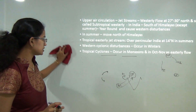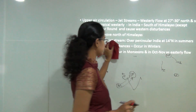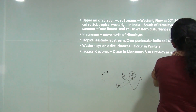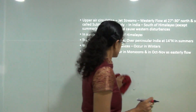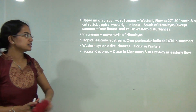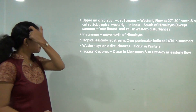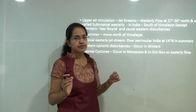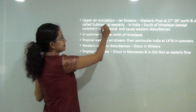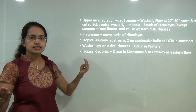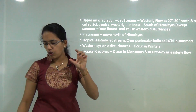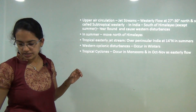Besides wind and pressure controls, upper air circulation is also important. It comprises two winds: the tropical easterly jet stream and the westerly flow. The westerly jet stream flows at 27 to 30 degrees north, also known as the subtropical westerly. In India it runs south of the Himalayas, except in summer, and is the main cause of western disturbances.